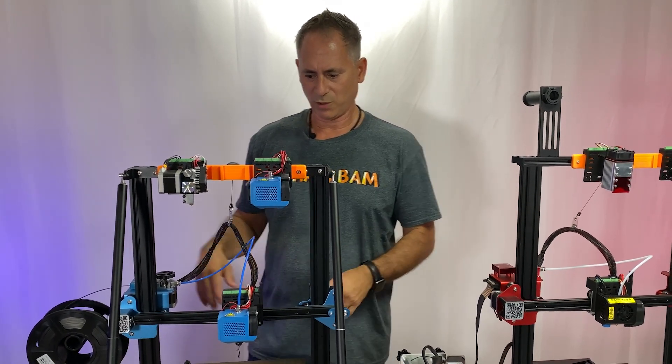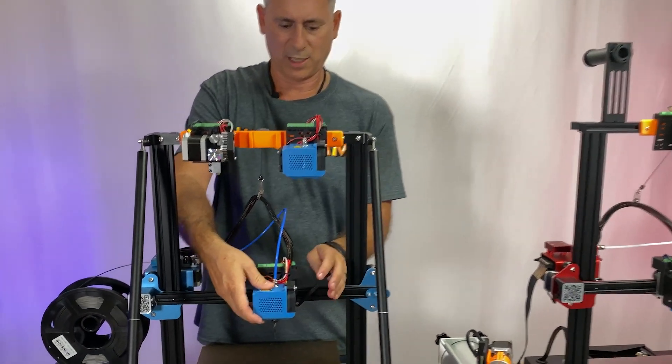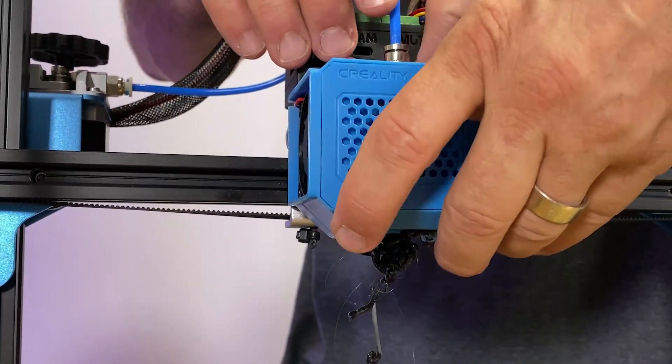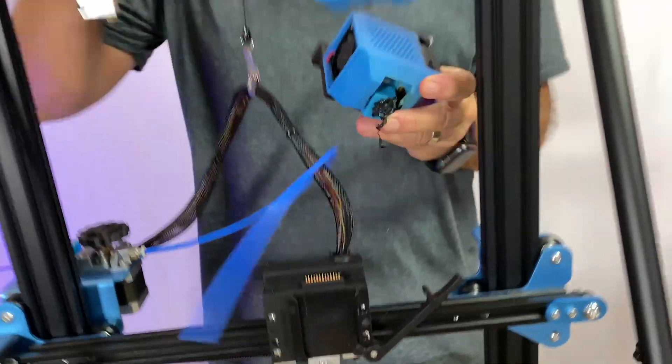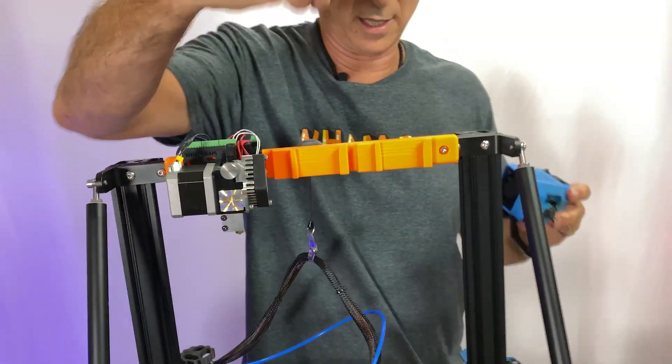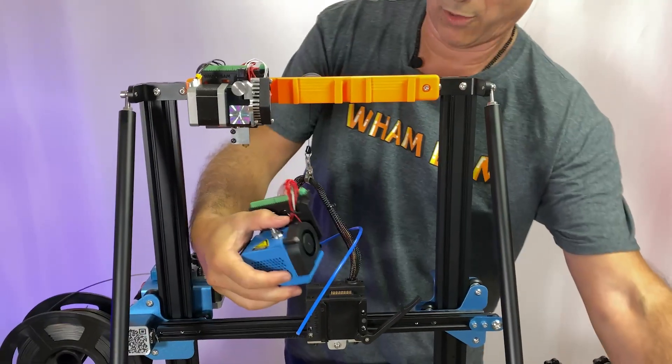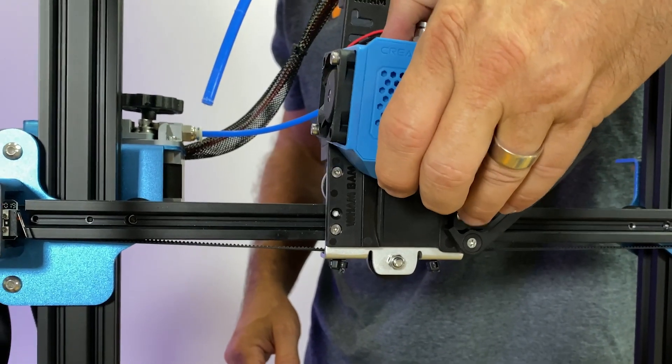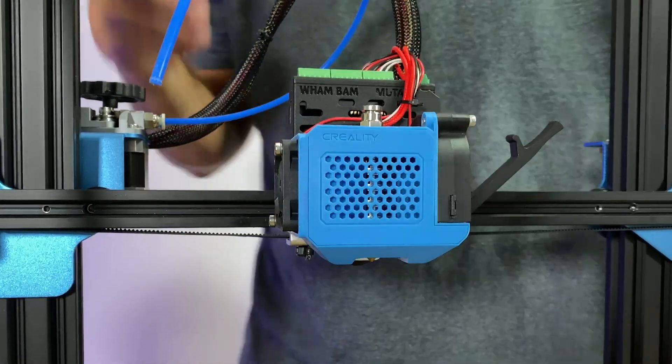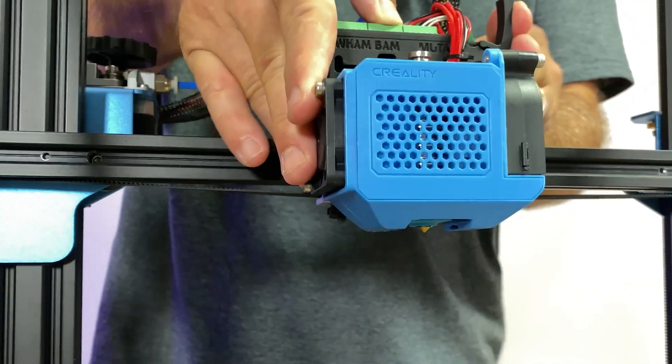Well the beauty of having a Mutant is I've got a clog, I just pull off the hot end with the nasty clog, and I take the same hot end set up already ready, slap it in there, and I'm good to go. I didn't lose any printing time.